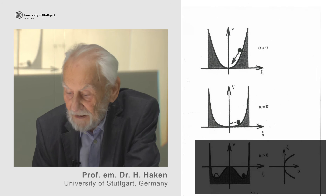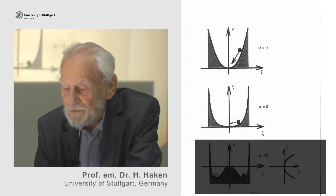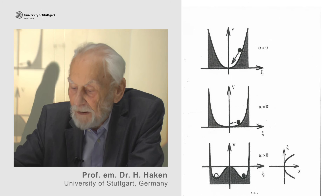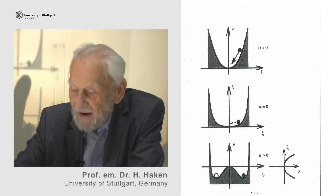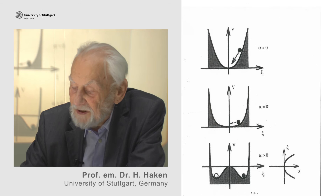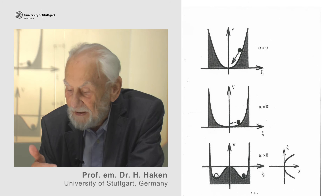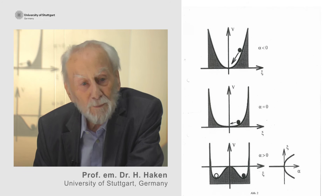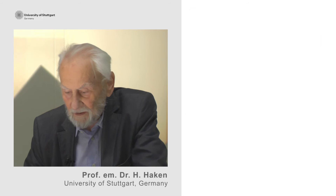The important thing is that, as we have shown for the first time in the laser, beyond a critical power input — because of the critical value alpha — the valley is entirely deformed. It gives way to two valleys, and that means we now have a stable amplitude xi. That is the explanation for why laser light is coherent: it has a stable amplitude. All our predictions could be verified experimentally in great detail.